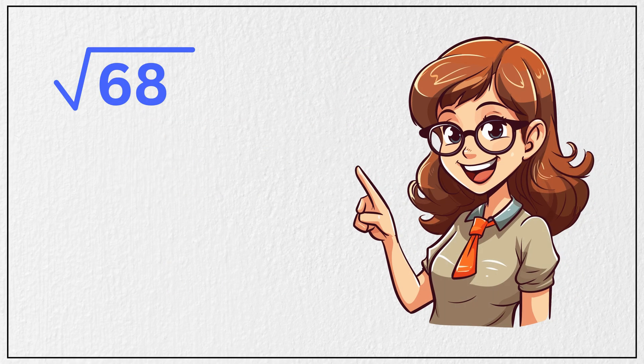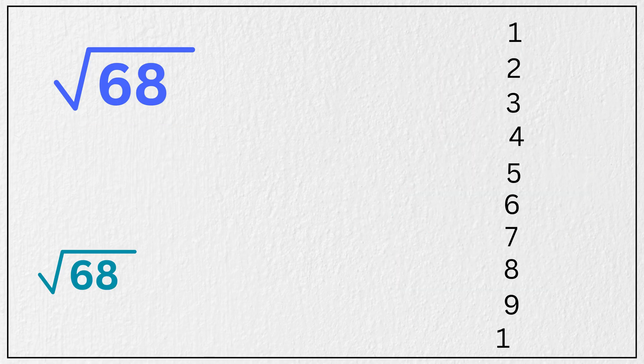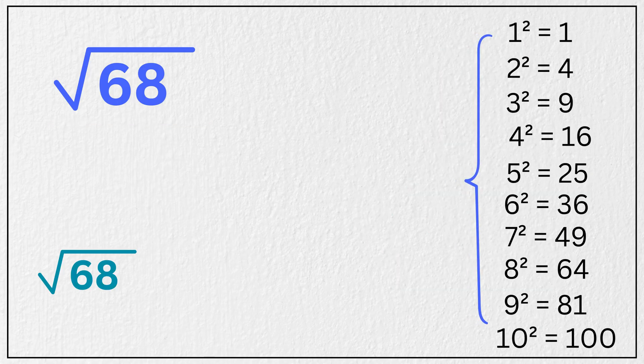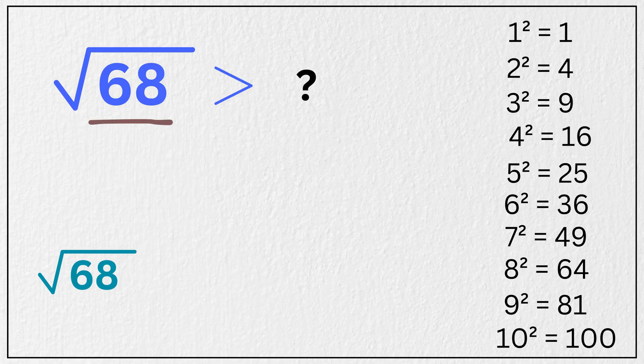Alright, let us start first with the square root of 68. Step 1: Write down the squares of all the numbers from 1 to 10. Now find the perfect square number which is just less than 68. Here it is 64, and its square root is 8.